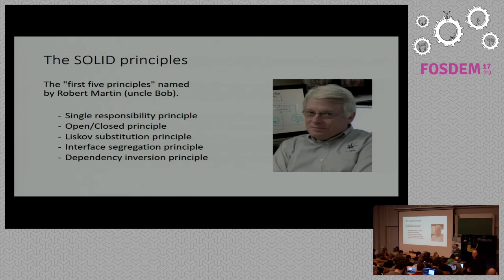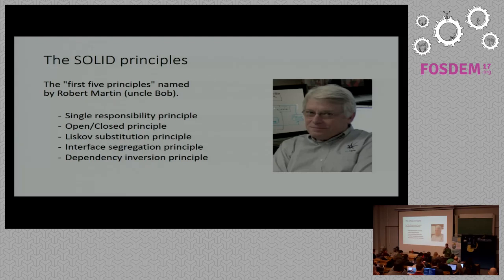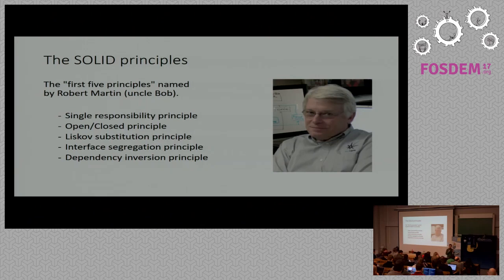First, we have the Single Responsibility Principle. That's the idea that a function, a class, or a module is supposed to do only one thing. Or as Robert Martin puts it, a class should have only one reason to change. If you think of software as a complex problem and you want to write it in code, the first thing you do is try to decompose that problem into many smaller sub-problems. Each of those sub-problems is probably going to be solved in a separate function. So if you keep decomposing things into smaller and smaller things, you end up in a situation where all those functions are doing just one thing, and that's where you have most of the reusability.